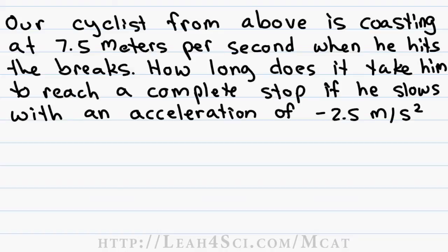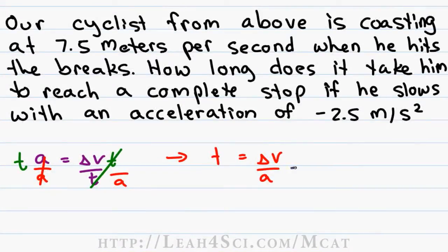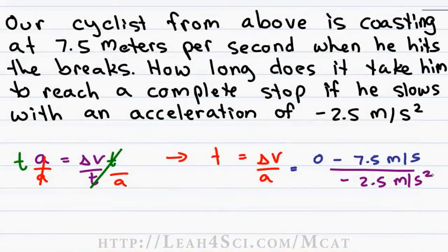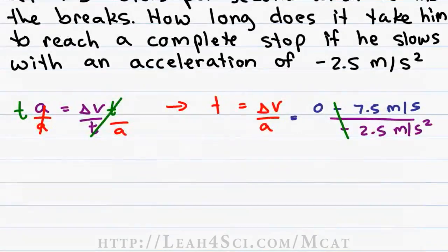This seems like a simple equation except that we're asked for time instead of acceleration or velocity. So we'll manipulate the equation as we saw earlier. We'll use the version t is equal to delta v over acceleration. In this case, delta v is v final minus v initial. v final is zero. v initial is 7.5 meters per second. Our acceleration is negative 2.5 meters per second. Time cannot be a negative unit and we verify that here because the negative change in velocity and the negative acceleration cancel out, leaving us with a calculation of 7.5 over 2.5.